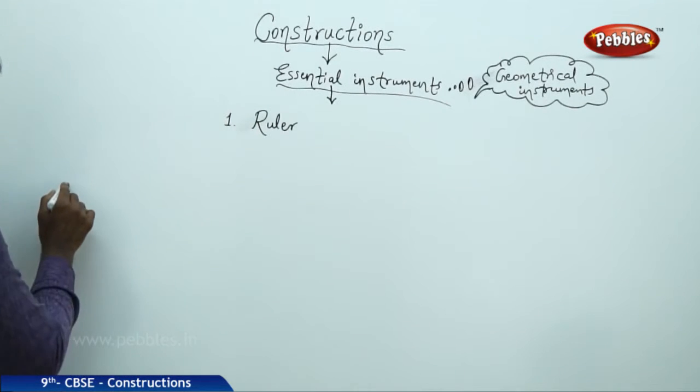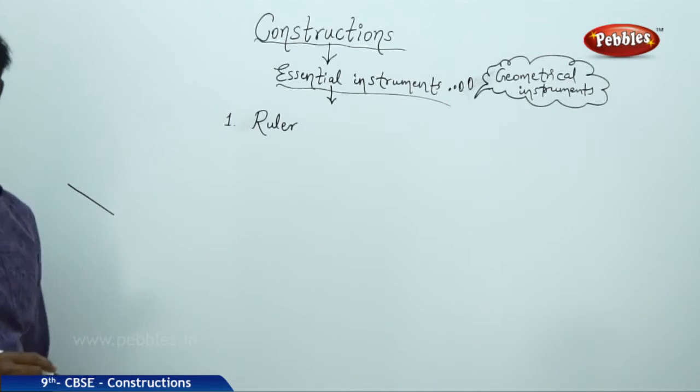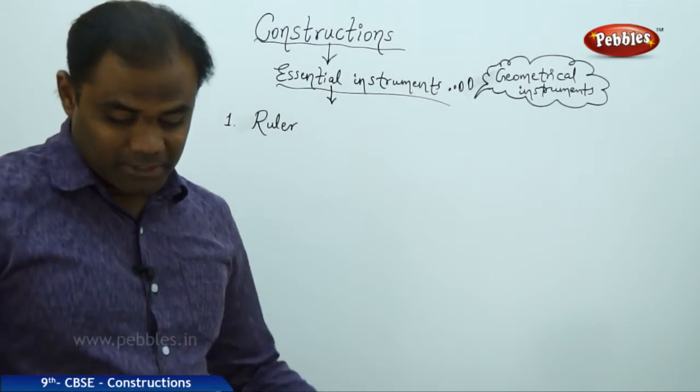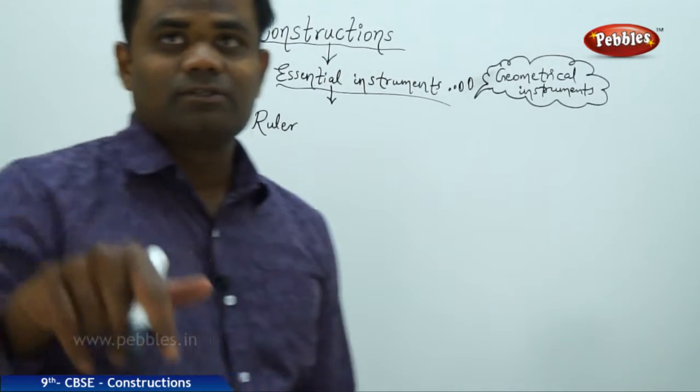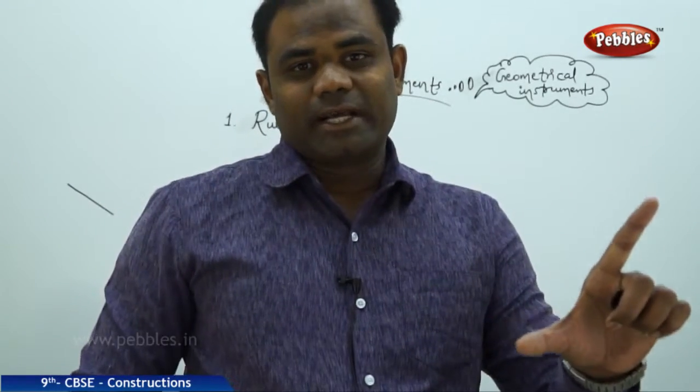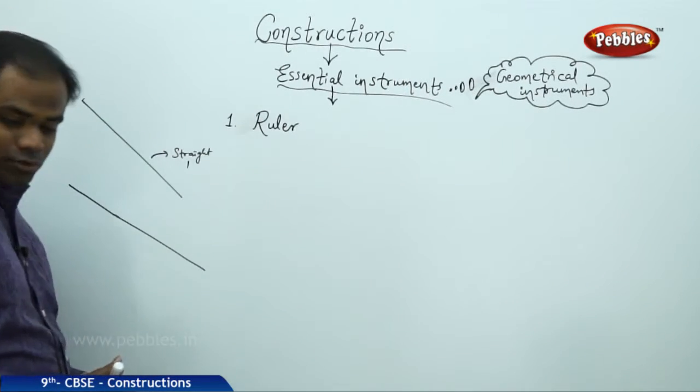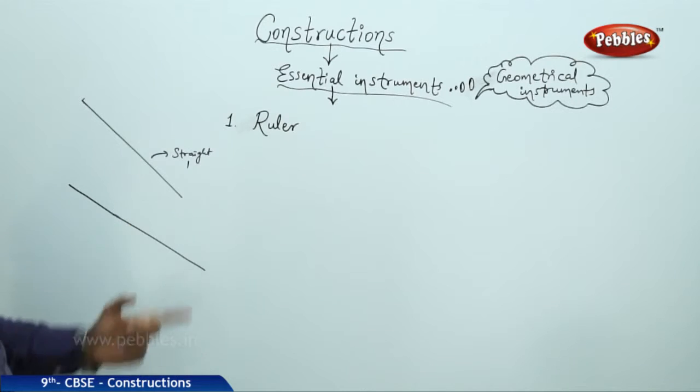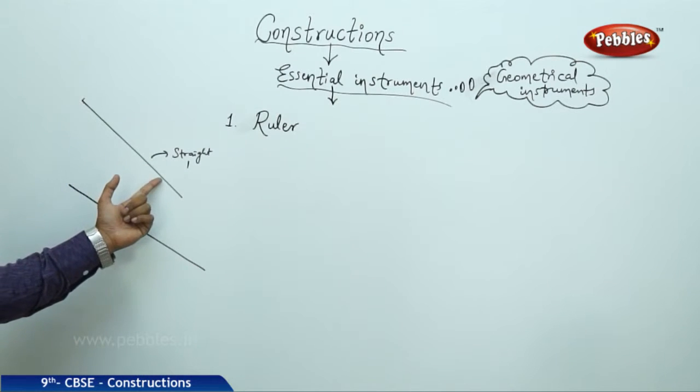For example, when I draw a straight line randomly, I may not get an exact line. But if I take a ruler and then do draw a straight line, then we get a perfect straight line. A ruler drawn through a straight line as given here gives me exactly straight line.